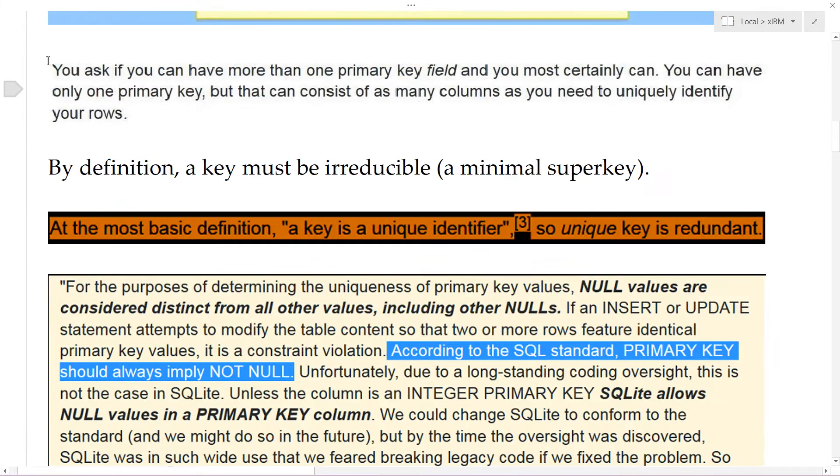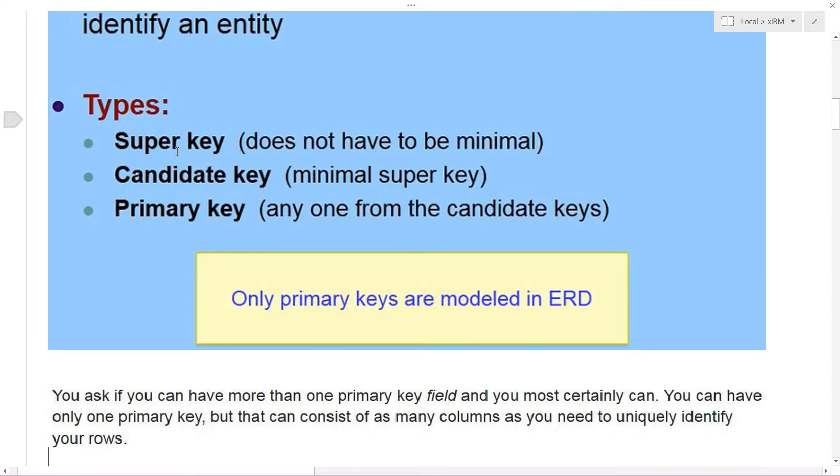Now, this comes from a forum post. You ask if you can have more than one primary key field, and you most certainly can. You can have only one primary key, which is sort of more of an abstract concept. But that can consist of as many columns or fields as you need to uniquely identify your rows. So, by definition, a key must be irreducible, a minimal super key. And what is a minimal super key? Well, we just looked at that. A minimal super key is a candidate key.